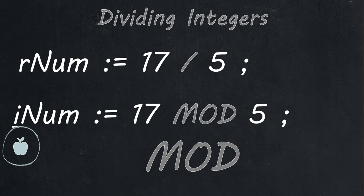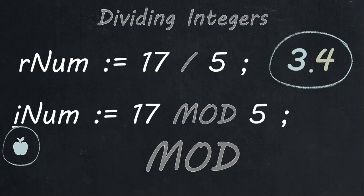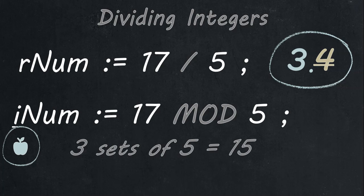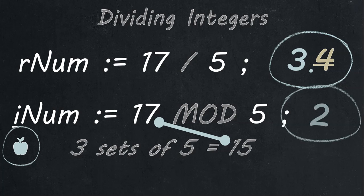Let's not get confused about what the remainder is. If I take 17 divided by 5 and type it in a calculator, you get 3.4. The problem is people think that 4 at the end is the remainder — no, that's not the remainder, that's just a decimal value, 0.4. The remainder is what's left over once you take the sets of 5 out of 17. For 17 mod 5: how many sets of 5 can I get out of 17? There are 3 sets of 5 in 17. 3 times 5 is 15. What's the difference between 17 and 15? If I take the 3 sets of 5 out of 17, I'm left with 2. That is the remainder — it's the whole number left over after you take out all the 5s.